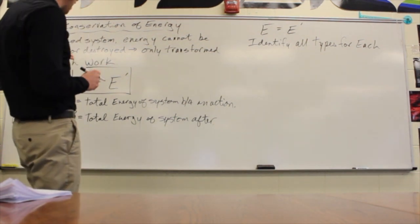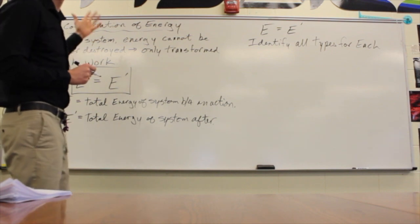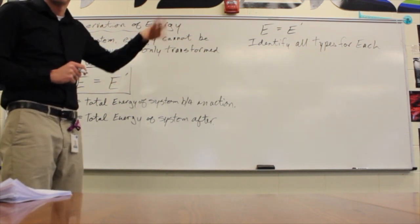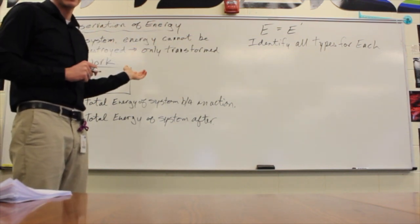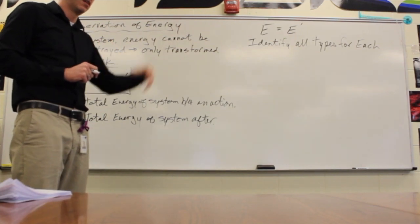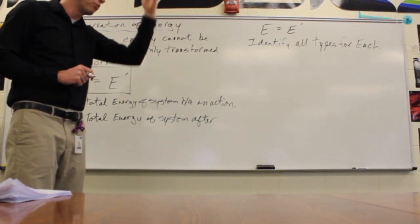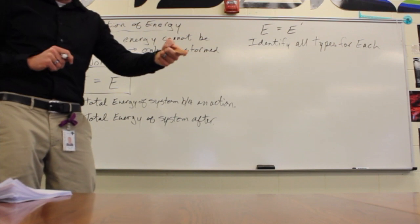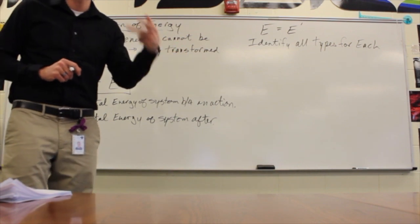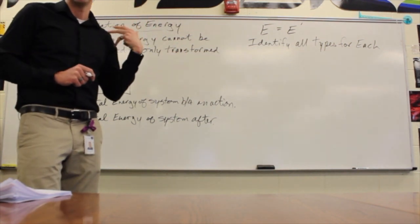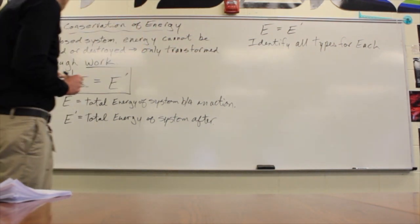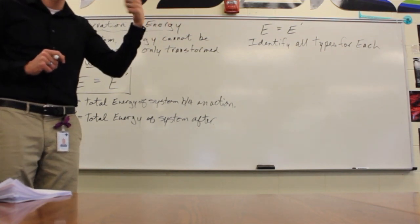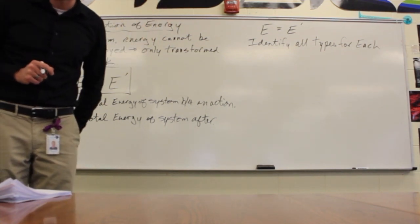Types of energy — the various forms that energy can transition through. Yesterday I showed you with the spring; we're talking about things like motion, spring or elastic energy, gravitational energy, and work. Other examples include chemical energy, nuclear energy, solar power, et cetera.